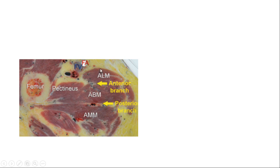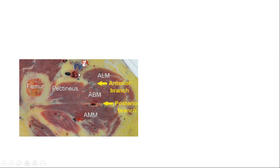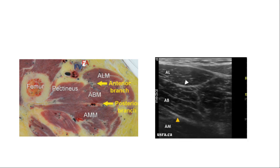Place the high-frequency probe at this area, trace the femoral vessels and pectineus muscle, and you will find three muscles arranged anterior to posterior. Identify the three muscles and block the anterior and posterior divisions at two levels respectively. The femoral vessels are visible; medial to them is the pectineus muscle, then adductor longus, adductor brevis, and magnus. The interfascial plane between brevis and magnus is for the posterior division, and the plane between longus/brevis and pectineus is for the anterior division. The nerves may be visible as hyperechoic band-like structures.